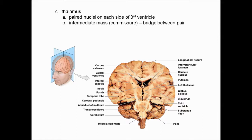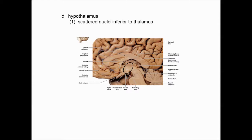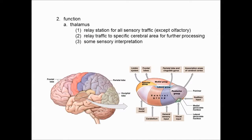The two thalami are joined by a commissure called the intermediate mass because of its position — they are interconnected by commissure tracts, just like the corpus callosum. Below the thalamus is the hypothalamus, made up of many scattered nuclei just inferior to the thalamus. We'll talk about the function of both structures.